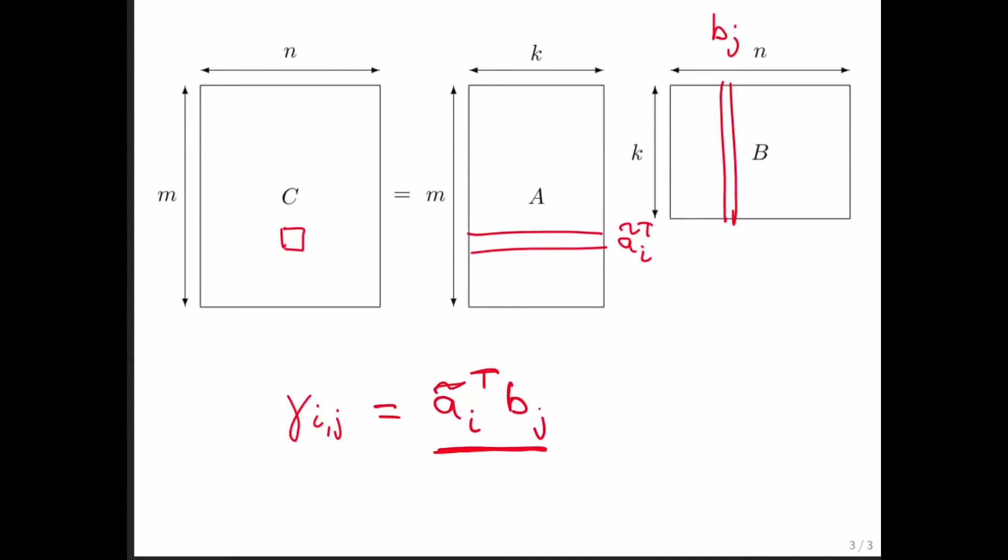What's the cost of a dot product or inner product? For vectors of size N, it's 2N plus or minus. Some would argue it's N multiplies and N minus 1 adds, and therefore it's really 2N minus 1, but among friends, we'll just call it 2N.